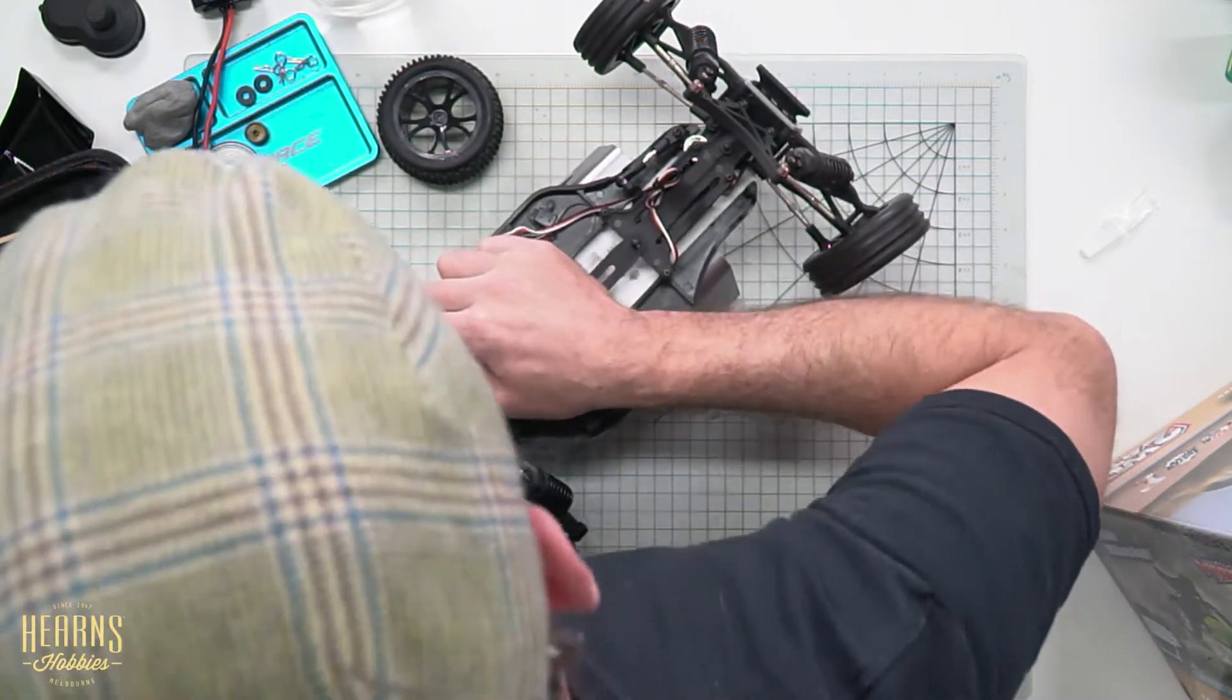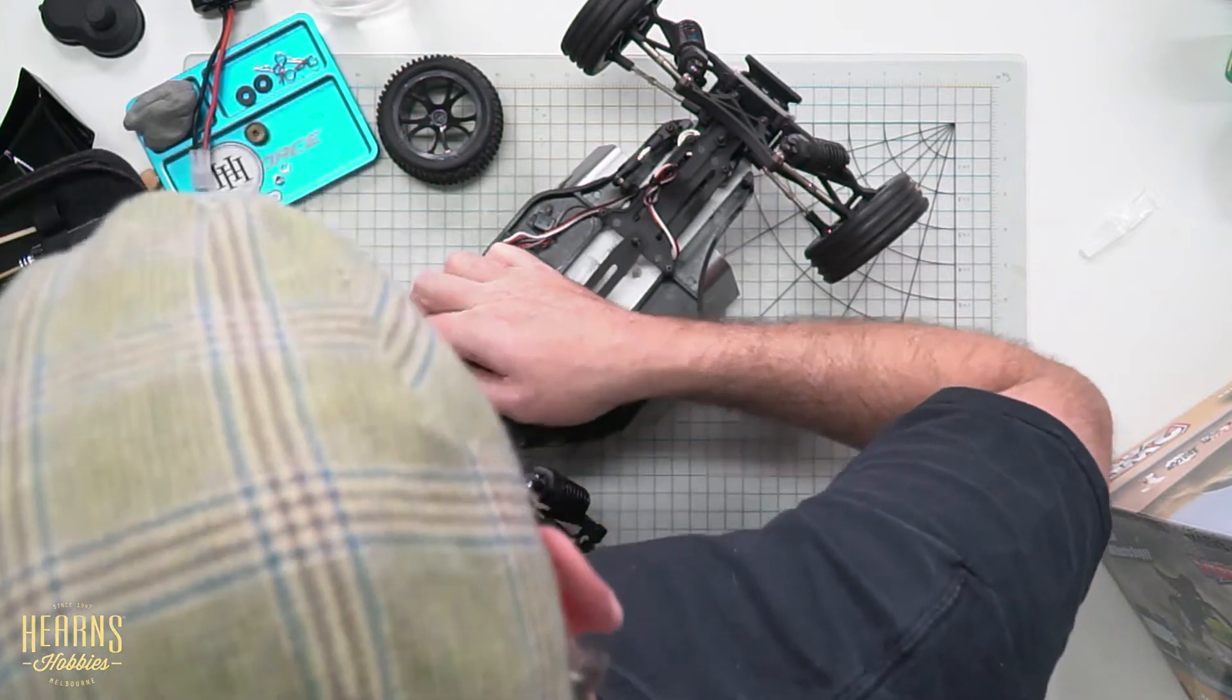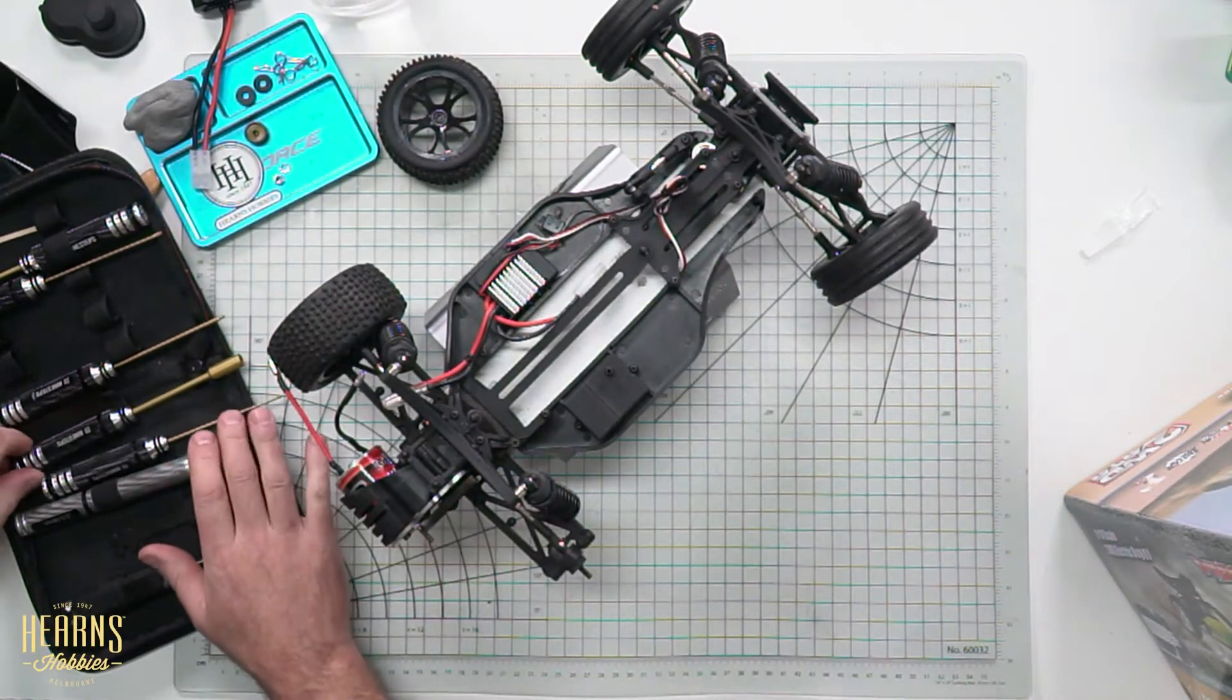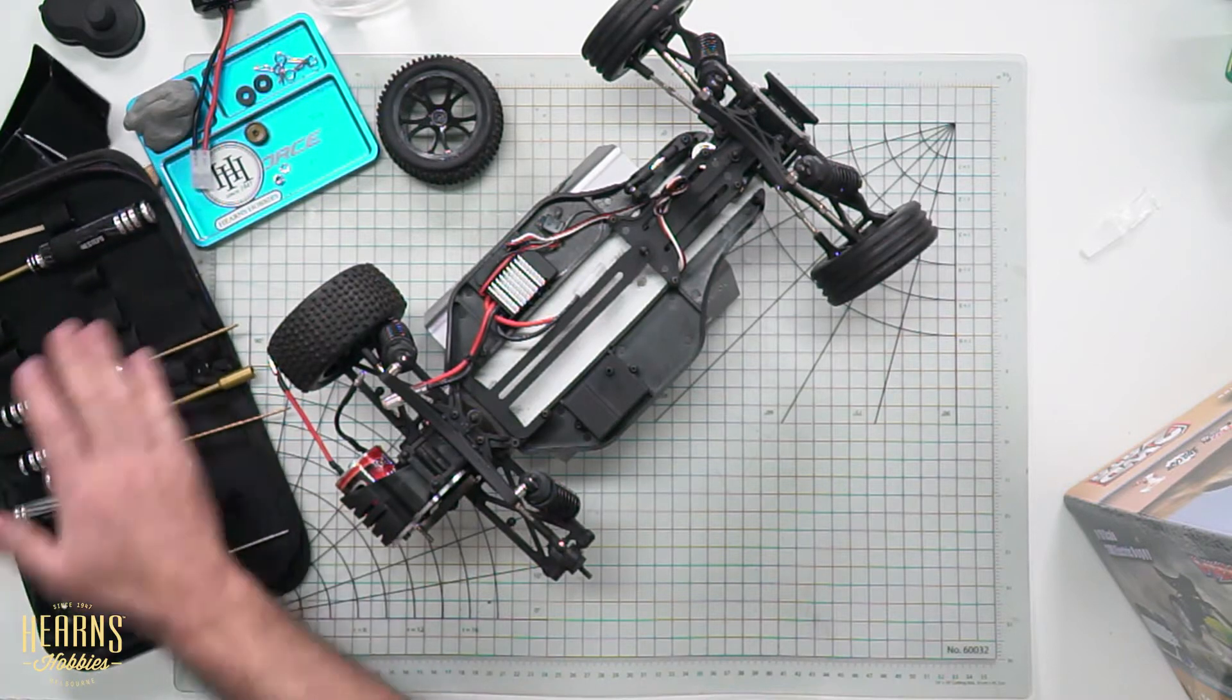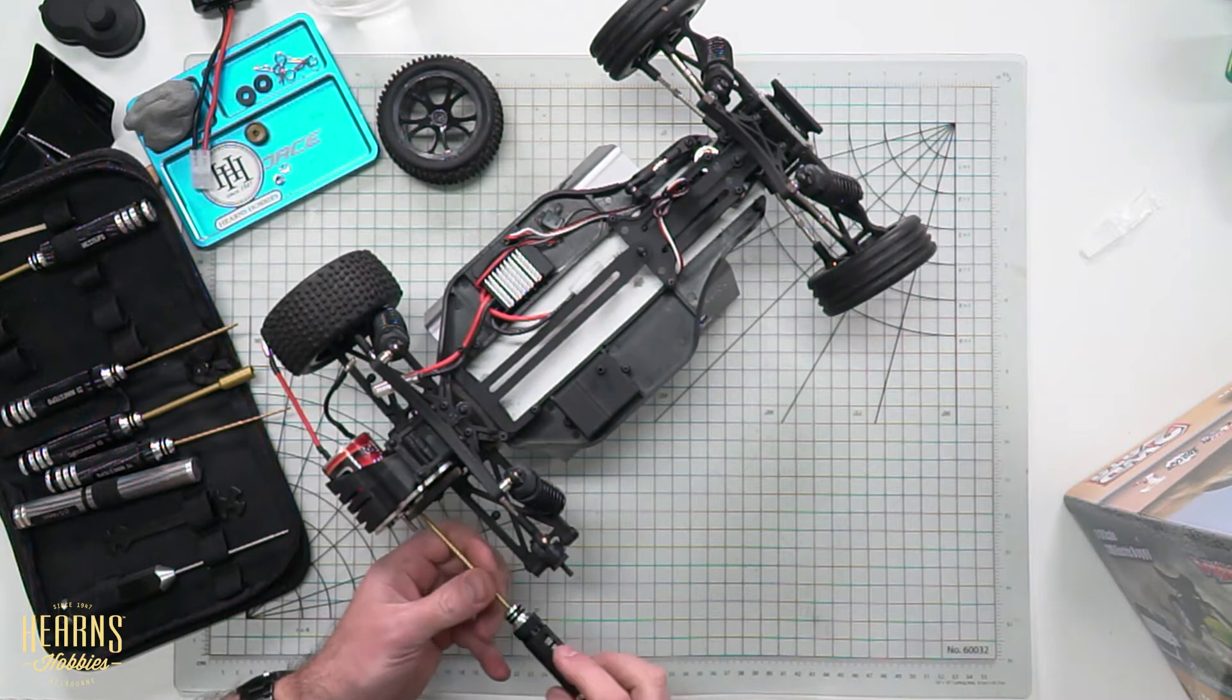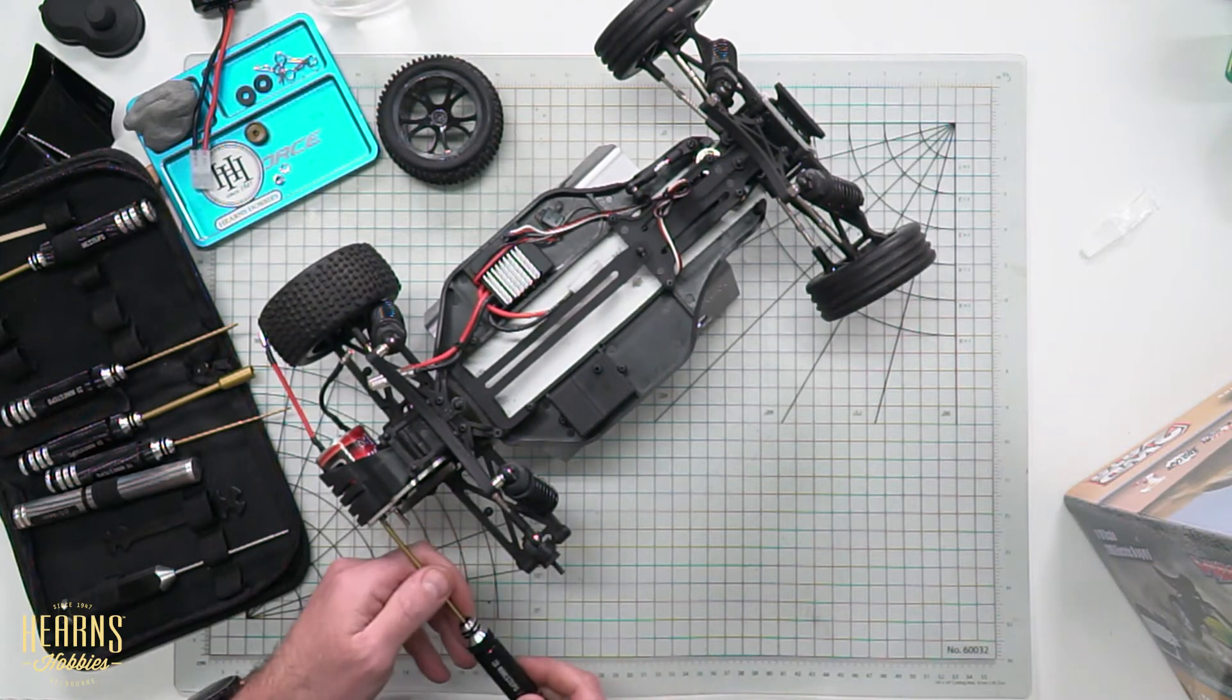Okay, so I've got the motor cover off. I'm going to unplug the motor, a couple of bullet connectors here. I've got the pinion off, now I'm just looking for a two and a half mil.